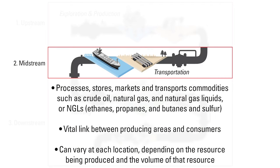The midstream industry processes, stores, markets, and transports commodities such as crude oil, natural gas, and natural gas liquids, or NGLs. Those NGLs are mainly ethanes, propanes, butanes, and sulfur. Midstream companies are a vital link between the far-flung petroleum producing areas and the population centers where most customers are located.